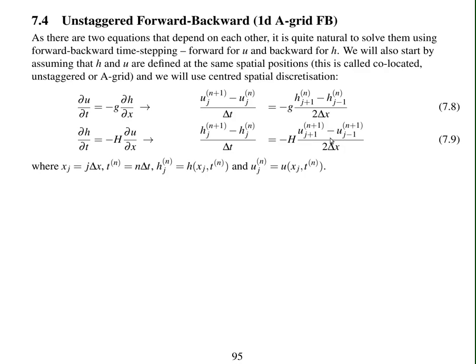So the velocity gradient is at time level n plus 1. This is a backwards time step, but it doesn't mean there has to be a solution of a matrix, because u, the velocity, is already available at time level n plus 1 since we've solved the equation for u first.